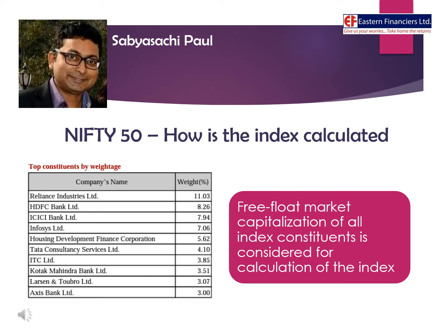Second to that, HDFC Bank has around 8% and ICICI Bank also has about 8% weightage. Infosys has about 7% and HDFC Limited about 5.5%. Tata Consultancy Services or TCS has about 4% — and notably, despite TCS having such a huge market cap, its weightage is less because it has a lesser amount of free float. Then there is ITC, Kotak Mahindra Bank, L&T, and the top 10 is rounded off by Axis Bank.